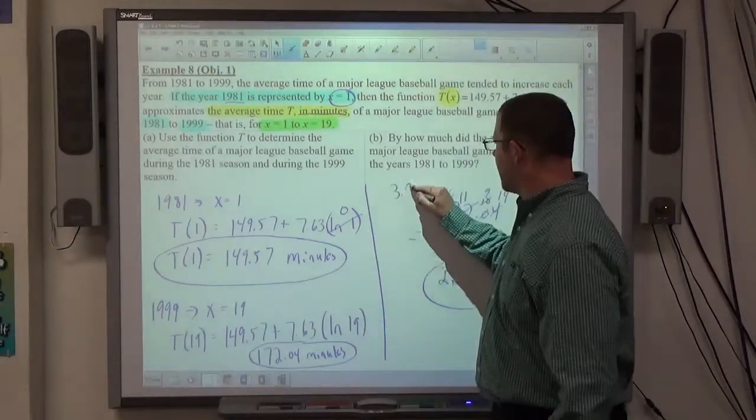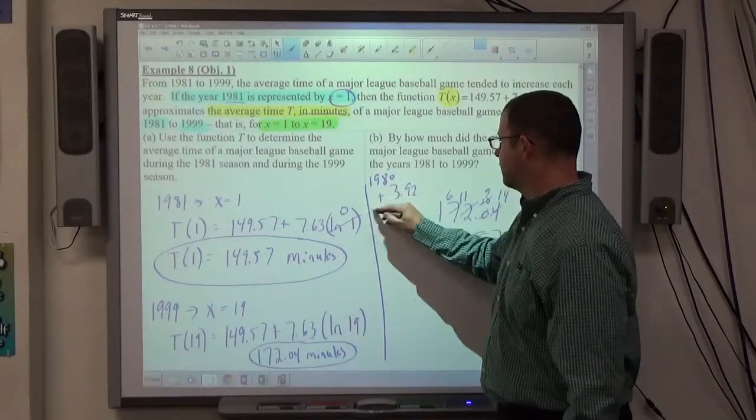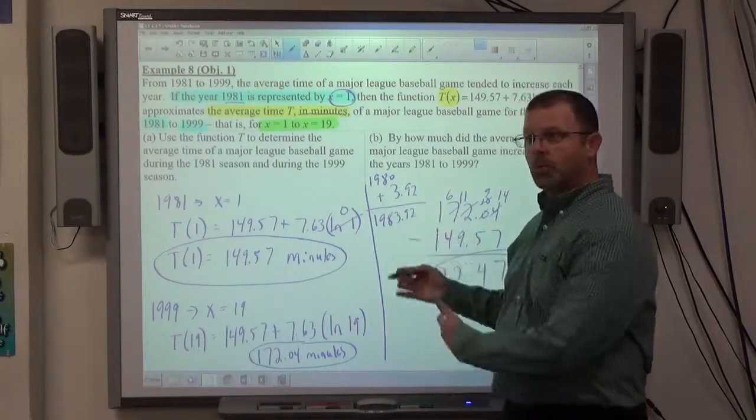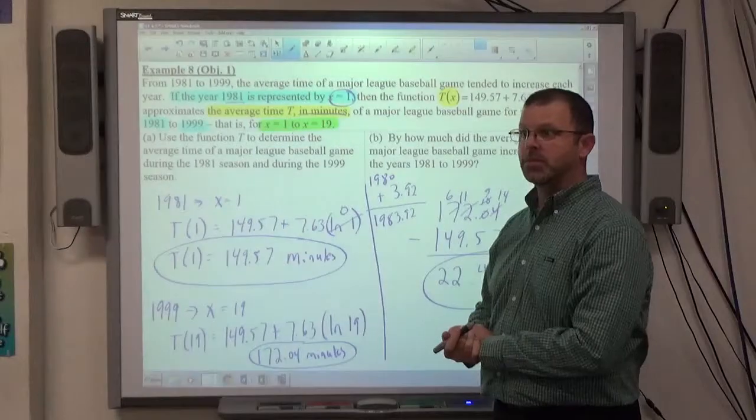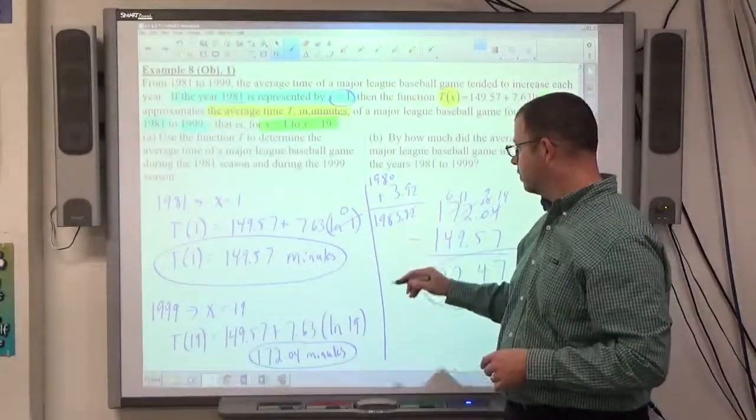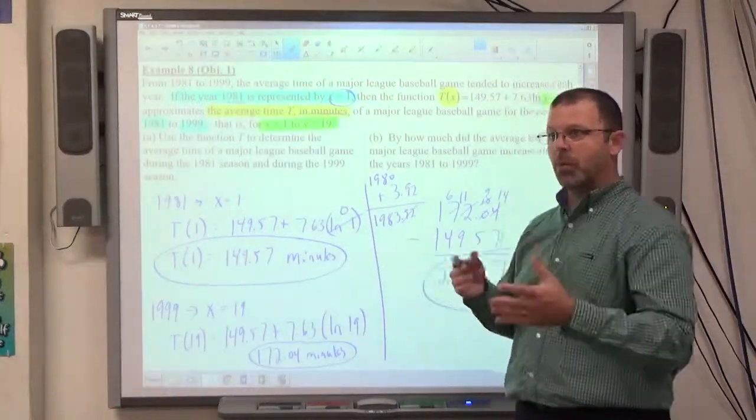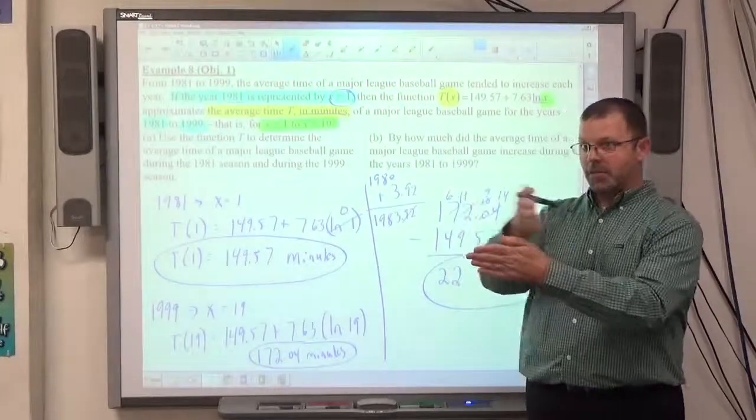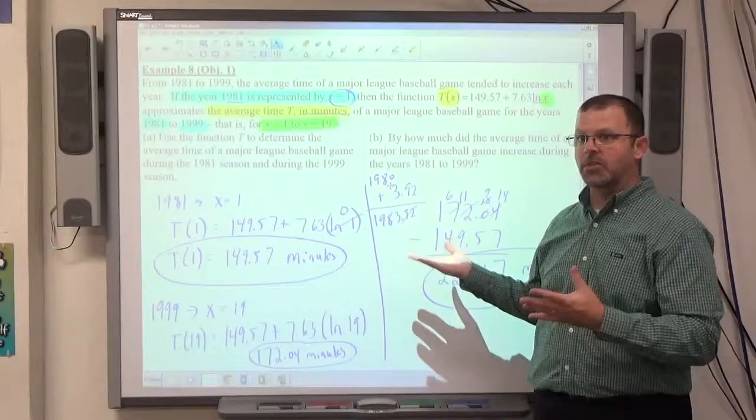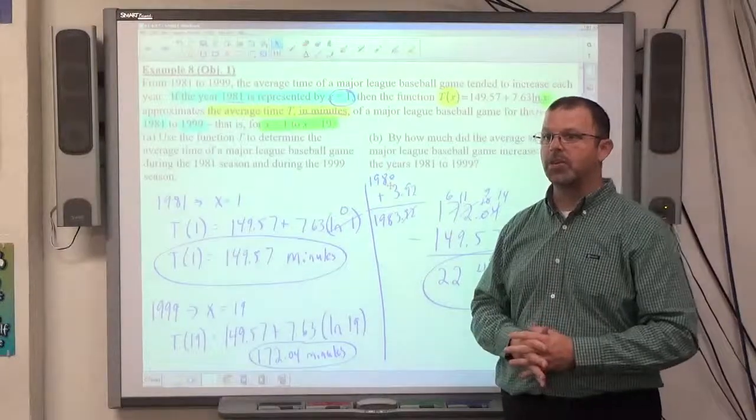So 3.92 plus 1980, right? So 1983.92, which would be during the 1983 season. It's before 1984 happened. So rather than rounding, just truncate, chop off the decimals. Rounding means go to the nearest one, but when you deal with what year it happened in, it's 0.92 year in December, but you're still in that year. So that's how you handle that. That's when the ball game would have been. During the 1983 season, baseball game would have been 160 minutes.